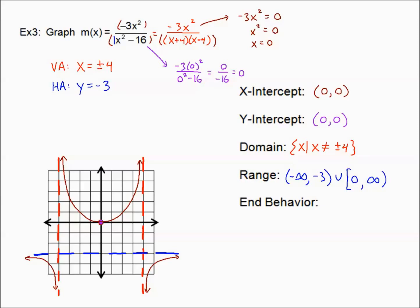End behavior: as x approaches positive or negative infinity, both ends approach the horizontal asymptote. m(x) is approaching negative three.